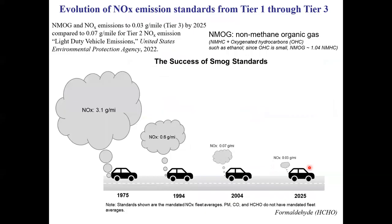Tier 3 standards were set in 2014, started phasing in in 2017, and are supposed to be completed by 2025. If you follow the emission of NOx in particular from Tier 1 to Tier 3: when emission standards were set in 1975, the NOx emission level was about 3 grams per mile. In Tier 1 that was brought down to 0.6 grams per mile, then in Tier 2 to 0.07 grams per mile, and it is supposed to further decrease by the end of Tier 3 in 2025.